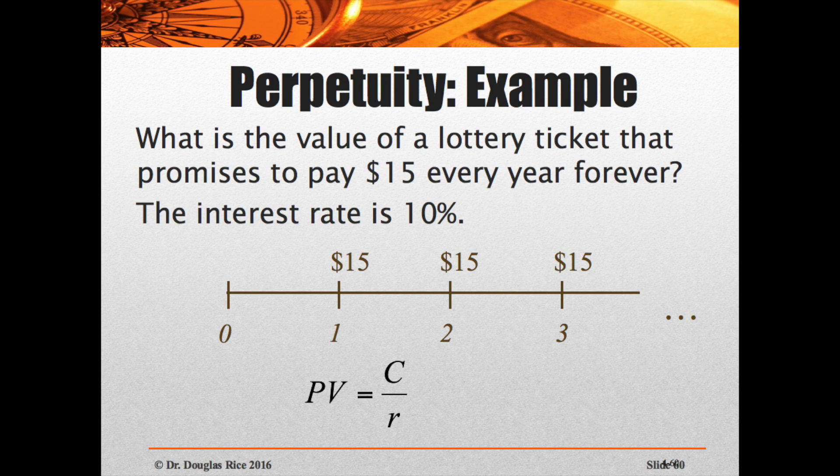Here's an example: what is the value of a lottery ticket that promises to pay $15 every year forever, if the interest rate is 10%? The value of the lottery itself is $15 divided by 10%, which equals $150. So the total value of all those lottery tickets to break even — if you bought every ticket in the lottery — would be $150.